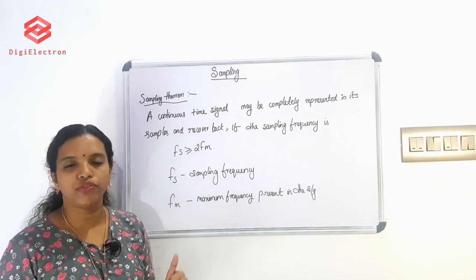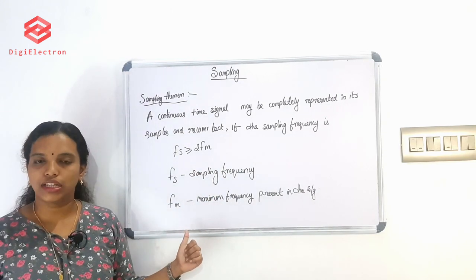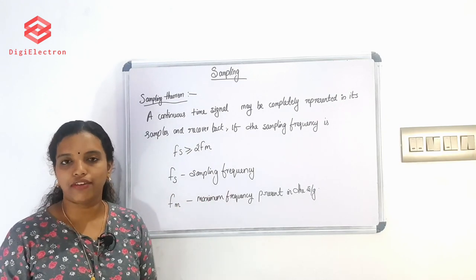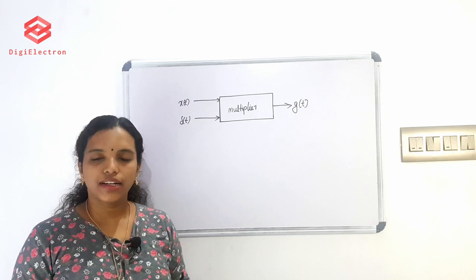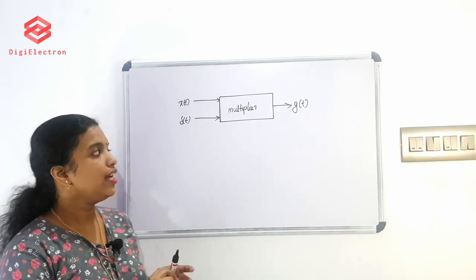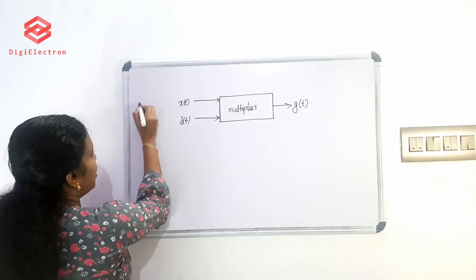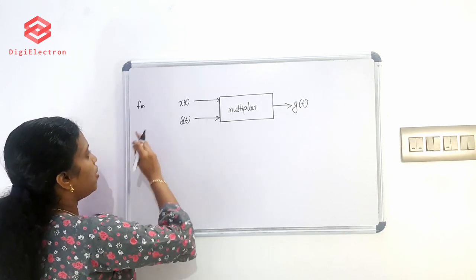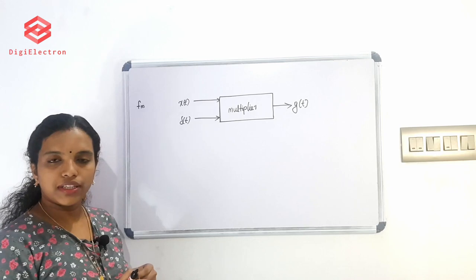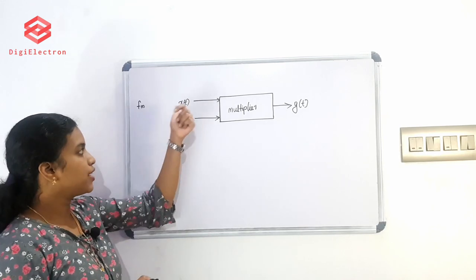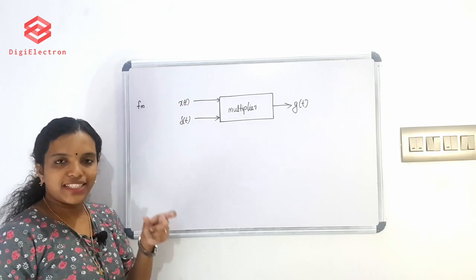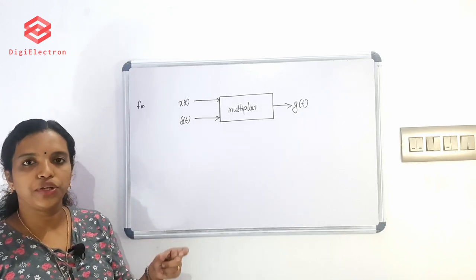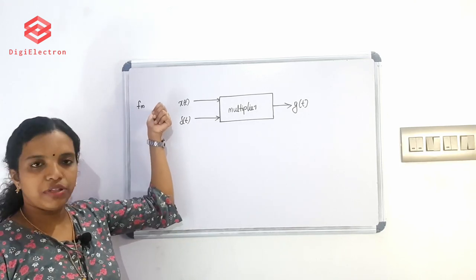Fs is the sampling frequency and Fm is the maximum frequency of the signal. If we have a band-limited signal, after Fm the signal value is zero. We have x(t) as the information signal, which is a continuous time band-limited signal.